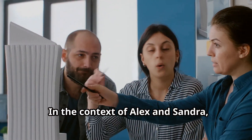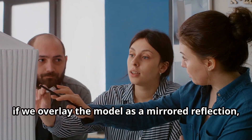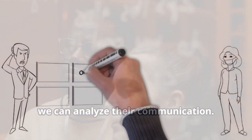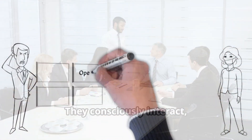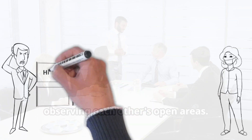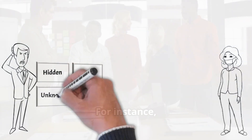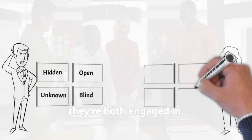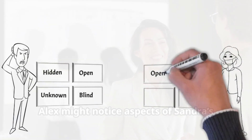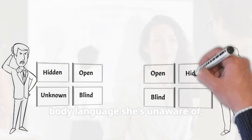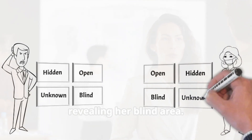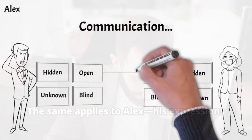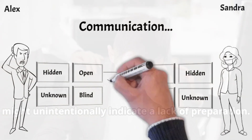In the context of Alex and Sandra, if we overlay the model as a mirrored reflection, we can analyze their communication. They consciously interact, observing each other's open areas. For instance, they might discuss a leadership program they're both engaged in. Alex might notice aspects of Sandra's body language she's unaware of, revealing her blind area. The same applies to Alex — his expressions might unintentionally indicate a lack of preparation.